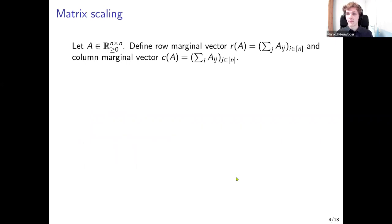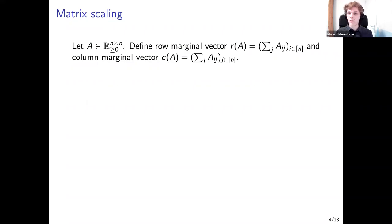Let's start with matrix scaling. We're given an input matrix A with non-negative entries. We define vectors of row marginals and column marginals: for every row and column, we compute the sum of the entries in that row or column. Because our matrix has no negative entries, the sums are always positive. We arrange these row sums and column sums into two vectors of length n, since our matrix has n rows and n columns.